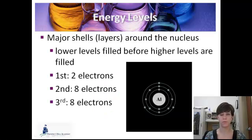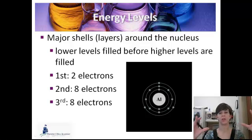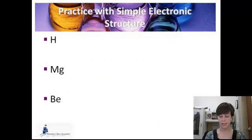So you remember energy levels. Energy levels are these shells or layers around the nucleus. We're going to fill up the lower levels closer to the nucleus first, and then build out. The very first energy level can hold up to two electrons. The second one can hold up to eight, and the third one can hold up to eight. And we're not going to talk about anything much bigger than that. So let's practice showing some really simple structures.